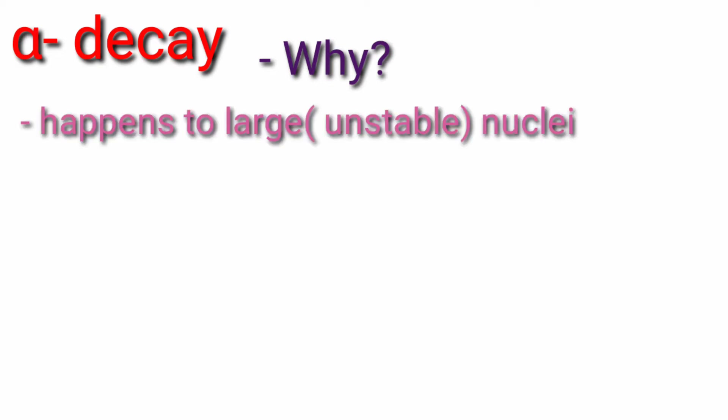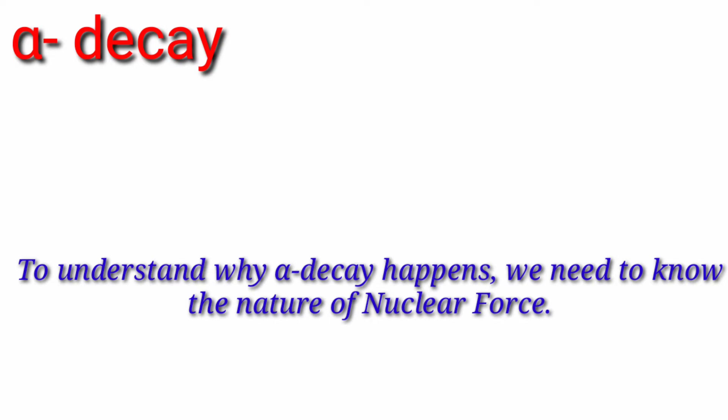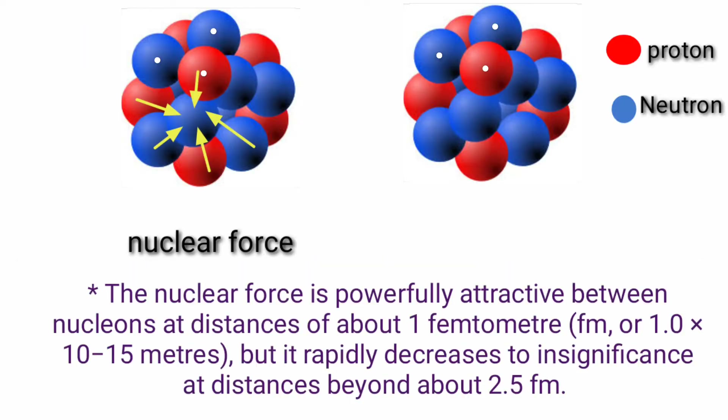Alpha decay happens to large nuclei whose atomic mass is greater than 210, which are unstable. To understand why alpha decay happens, we need to know the nature of nuclear force. The nucleus is held together by the nuclear force.